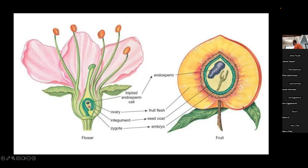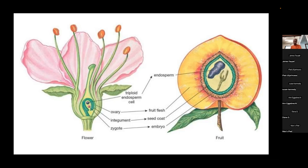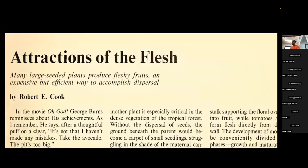The idea is that if the plant invests a lot of energy into creating all of this pulpy, fleshy, tasty material to bribe an animal to come eat it - eat the fruit and then disperse the seed elsewhere - thus spreading its range. So the seeds don't just fall on the ground right around the parent tree. That's going to be the key to this whole thing: dispersal, specifically mechanisms of seed dispersal by animals eating it.